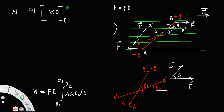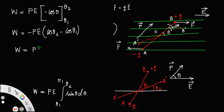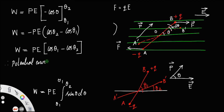Now applying the limits, the lower limit is θ₁ and upper limit is θ₂. Taking the minus sign outside: W = −pE [cosθ₂ − cosθ₁]. Multiplying through by the negative sign gives work W = pE(cosθ₁ − cosθ₂). This work done to rotate the dipole is stored as its potential energy, therefore potential energy U = pE(cosθ₁ − cosθ₂).